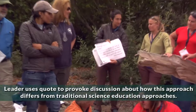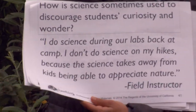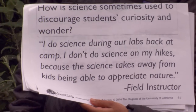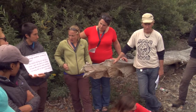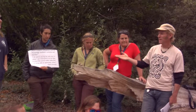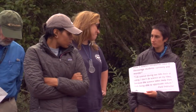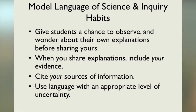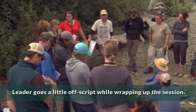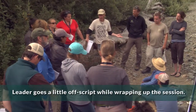Here's a quote: 'I do science during our labs back at camp. I don't do science on my hikes, because the science takes away from kids being able to appreciate nature.' This is from a program that puts a very strong value on science. What's behind somebody making a statement like this? I think it must be somebody who doesn't really understand science or has a very narrow view of what it is. It might be someone who's not very curious themselves — they can't see how it would be fun to get kids to try and figure out stuff. You don't have to conduct full-on investigations to make explanations from evidence, and you can have a rip-roaring science-y time.